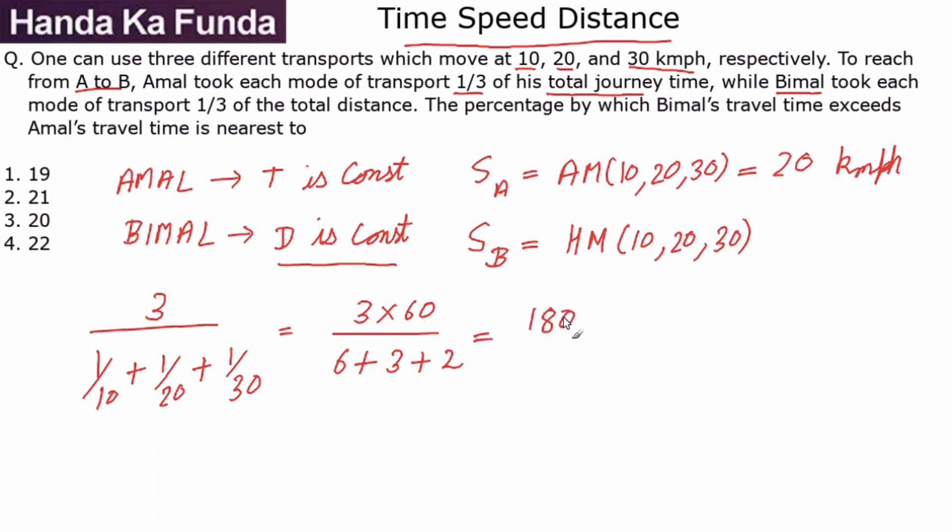Once I have this, my calculations would become a lot simpler. Why? Because I have the ratio of the speeds as 20 is to 180/11, which is 11 is to 9.